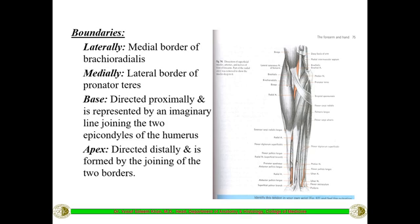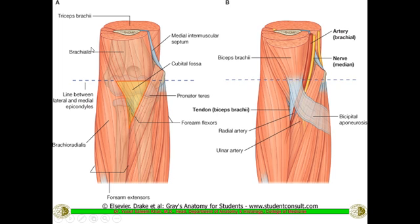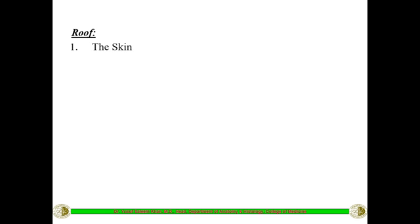This forms a triangular structure called the cubital fossa. The apex is directed distally towards the hand and is formed by the junction of the two muscles — the brachioradialis and the pronator teres. So it has a base and an apex: laterally the brachioradialis, medially the pronator teres, and the base is the imaginary line from lateral to medial epicondyle.